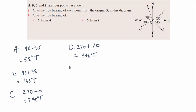Now let's try question B — it gets a bit harder. The true bearing of O from A means I'm starting at point A, facing north from point A, and trying to get to the origin, so I'm after that angle there. It doesn't mean this angle all the way around — that's a common misconception. I'm starting at point A looking directly north, and I draw a north line from A to find the angle from point A all the way to the origin.